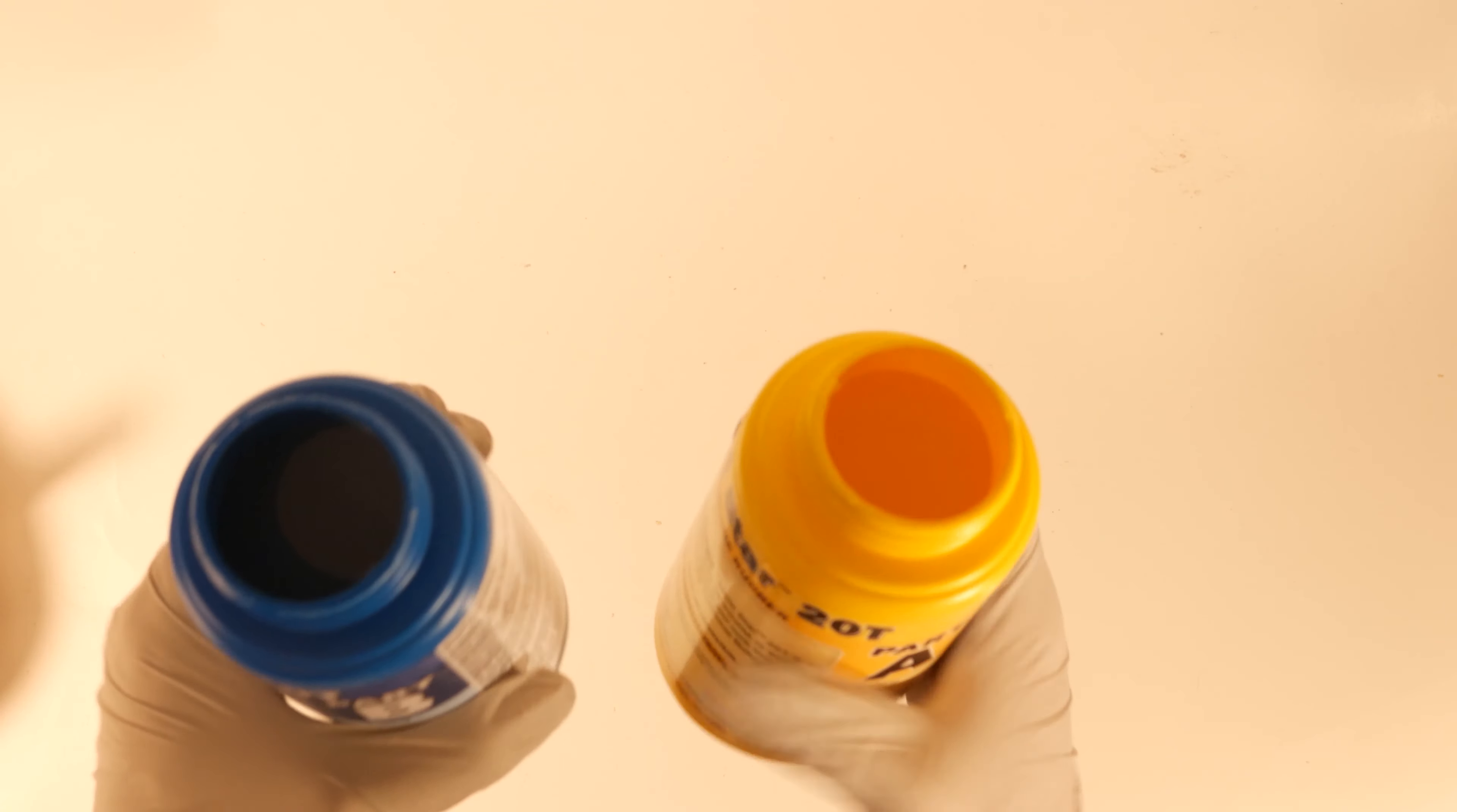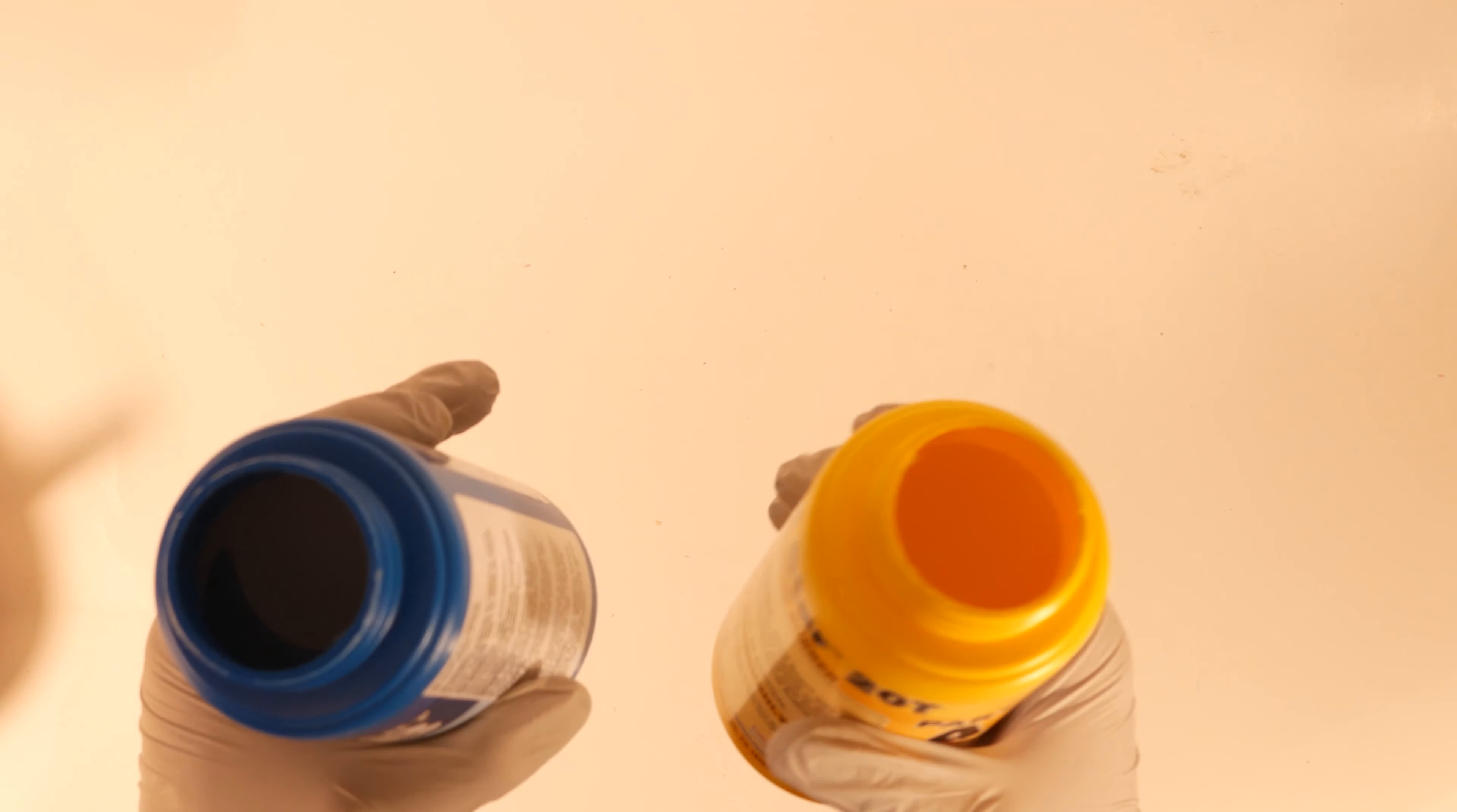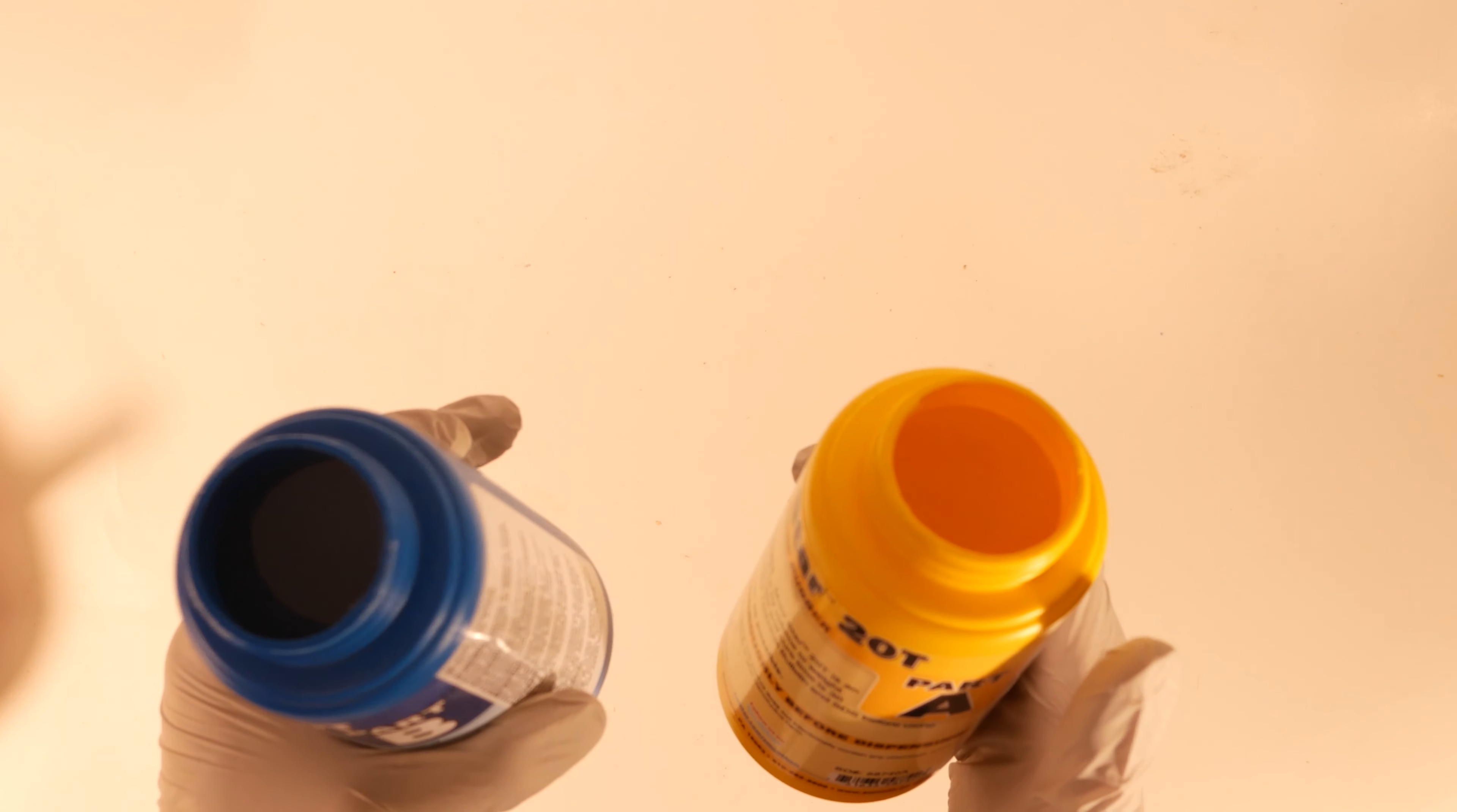Now silicone is really easy. All you do is mix part A with part B in equal quantities at least for this silicone. Other ones do it by weight. Once you've mixed them by volume then you're done. You pour them into the mold and it will solidify by itself.